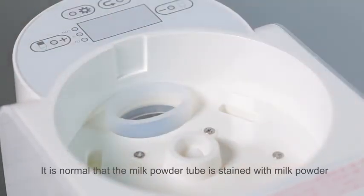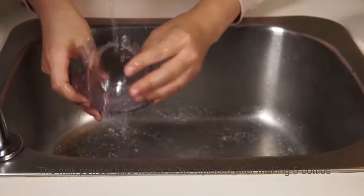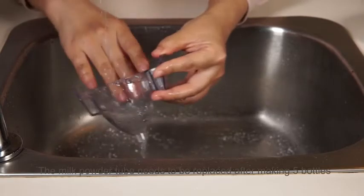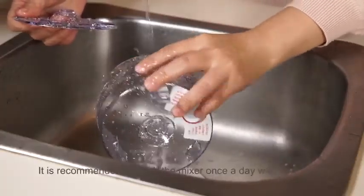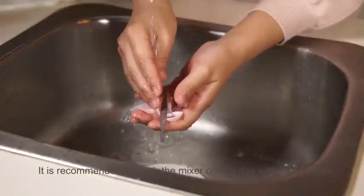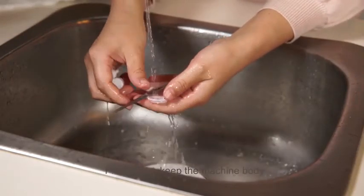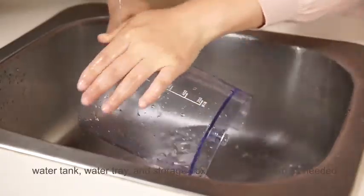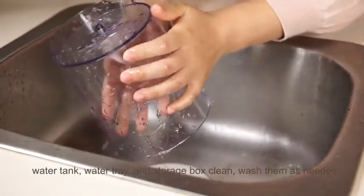It is normal that the milk powder tube is stained with milk powder. The milk powder tube needs to be replaced after making five bottles. It is recommended to wash the mixer once a day with warm water. Please also keep the machine body, water tank, water tray and storage box clean. Wash them as needed.